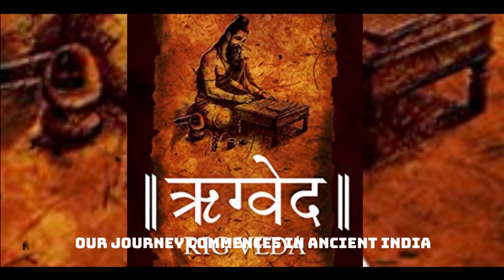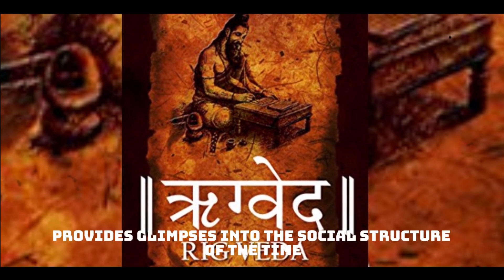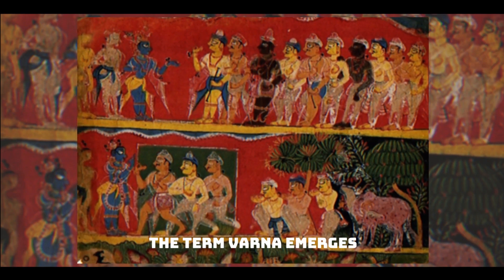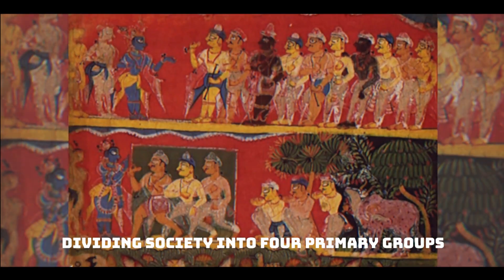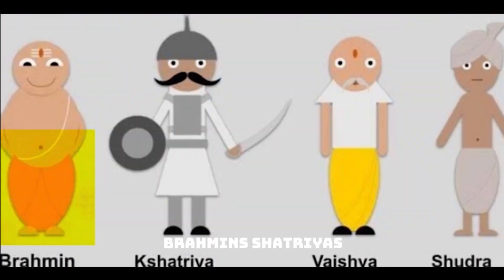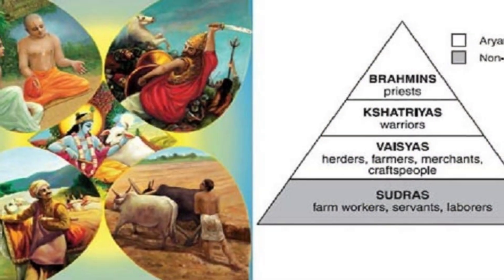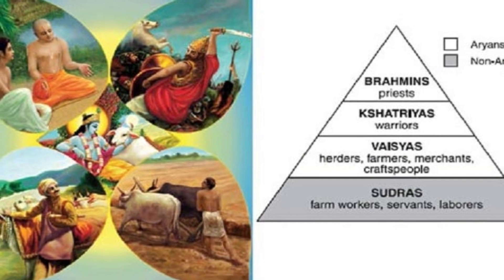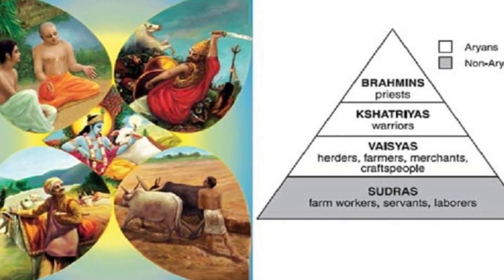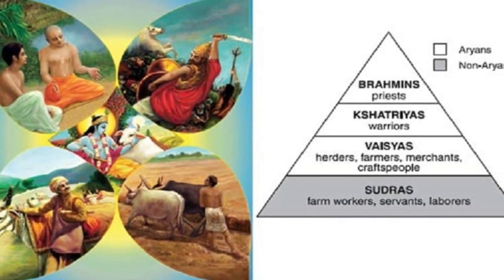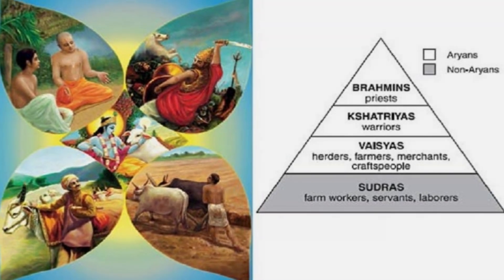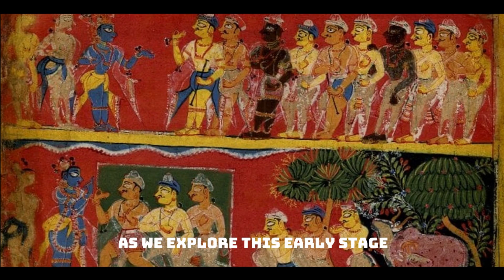Our journey commences in ancient India, where the Rig Veda provides glimpses into the social structure of the time. The term Varna emerges, dividing society into four primary groups: Brahmins, Kshatriyas, Vaishyas, and Shudras. Initially, these divisions were fluid, emphasizing natural aptitudes and talents. The Varnas were more like occupational categories, promoting a harmonious social order based on diversity and symbiotic coexistence.